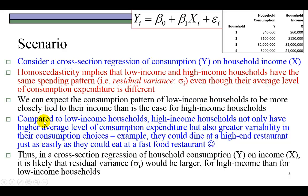Therefore, compared to low-income households such as households one and two, high-income households not only have a higher average level of consumption, but also greater variability in their consumption choices — from $200,000 to $2 million. The wealthy households could afford to dine at high-end restaurants just as easily as they could pull up near a McDonald's and eat a Big Mac. They have that discretion, and therefore in a cross-section regression of consumption and income, it is likely that residual variance — i.e., heteroscedasticity — would be an issue.